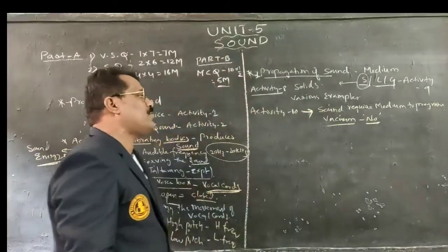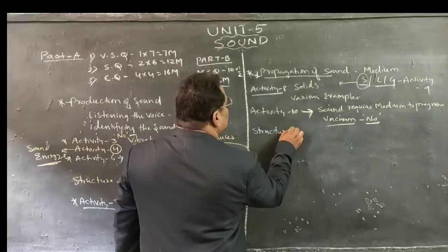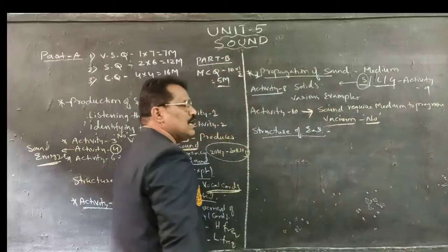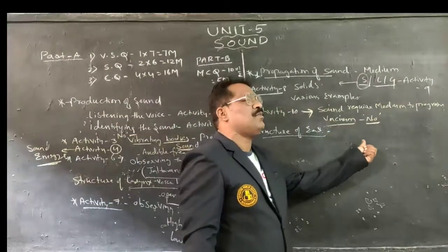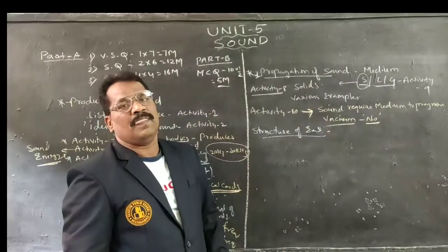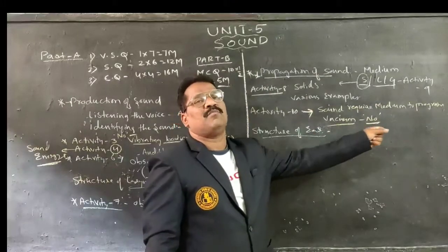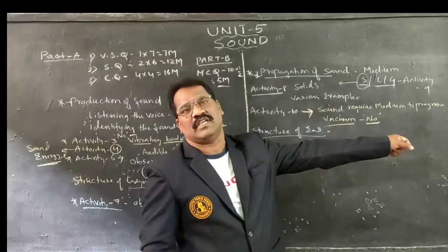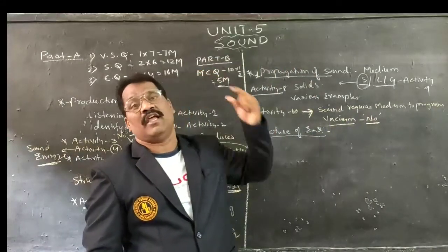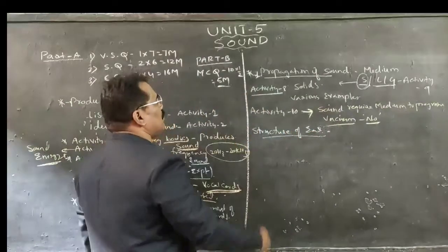The next concept is the structure of the ear. The ear consists of 3 parts: outer part, middle part, and inner part. How sound propagates from the outer part to the middle part to the inner part, and how sound is received through the hair cells and nerves to the brain — we have already studied this within the structure of the ear.